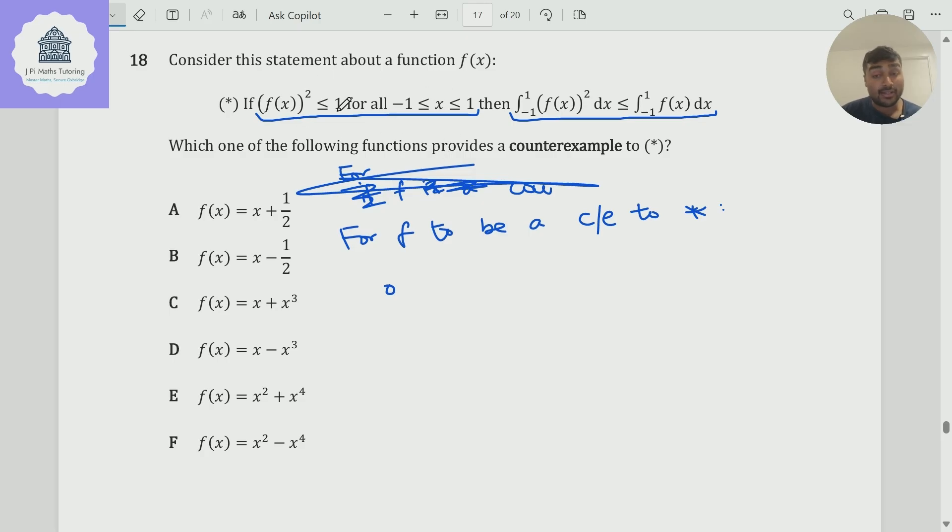And we also need this conclusion to not hold. So we need the integral from -1 to 1 of f² dx to be strictly bigger than the integral from -1 to 1 of f dx.